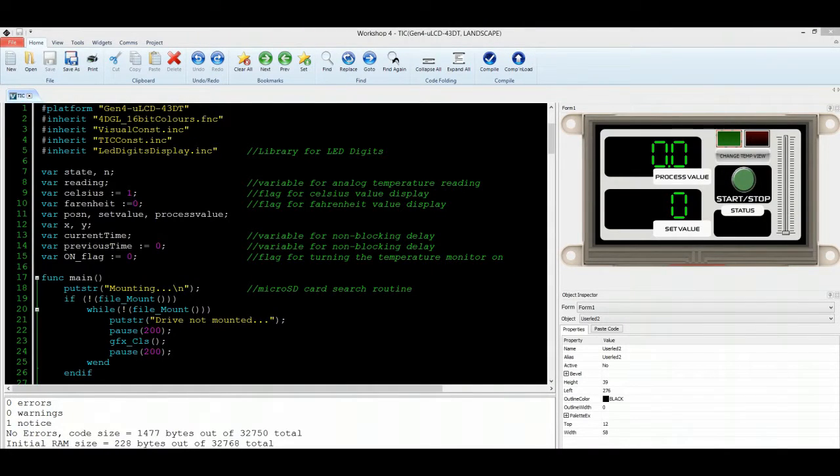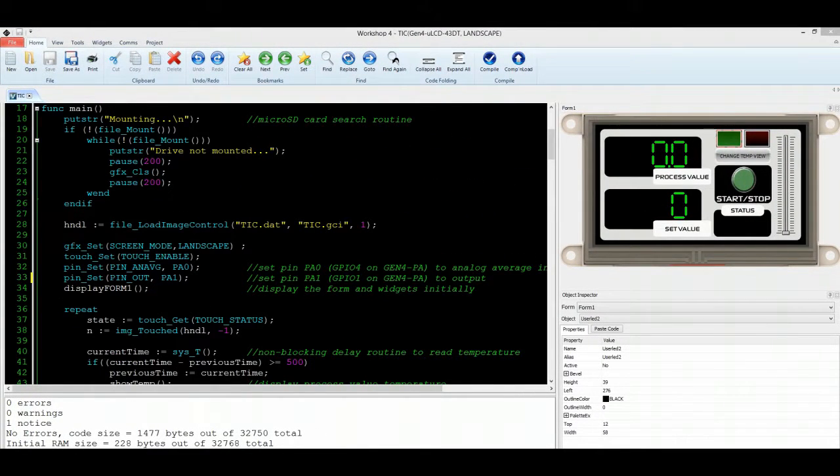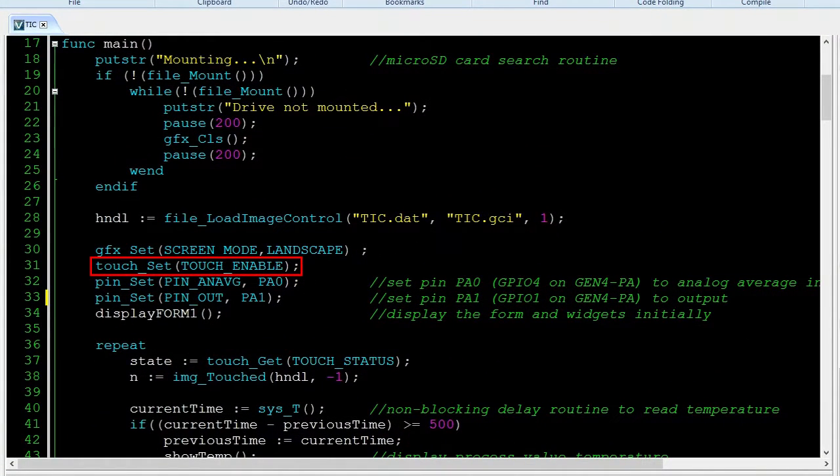The program is very simple and straightforward too. Of course, let's not forget to include our libraries. And here are our flags and variables. In the start of our main loop, we perform initializations such as enabling touch detection. Then, we set pin PA0 or GPIO4 to average analog input. It is an internal function of the JBLO16 processor which enables reading and averaging analog inputs.